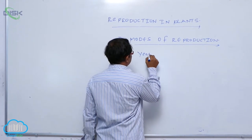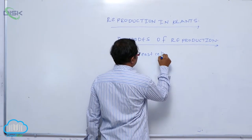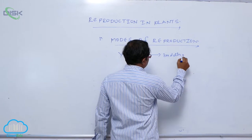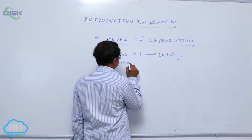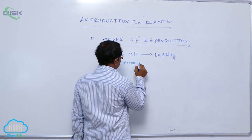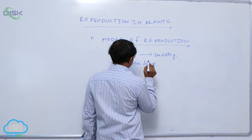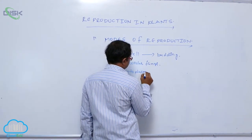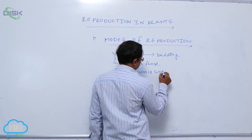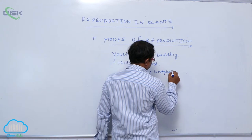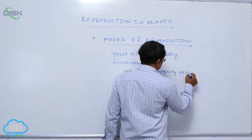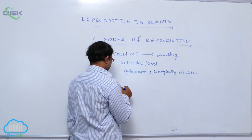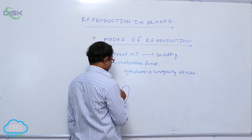In yeast cell, a budding process occurs. Yeast is the unicellular fungi. In this, cytoplasm is unequally divided. For example, it is the yeast cell — this is the parental cell.